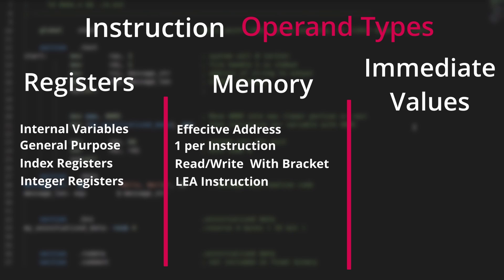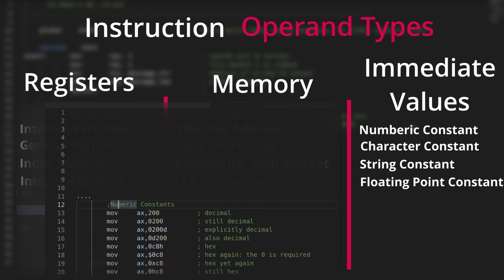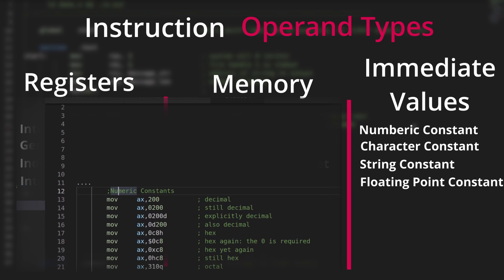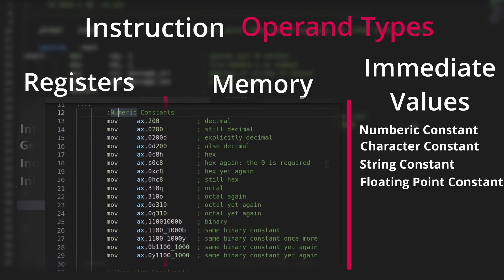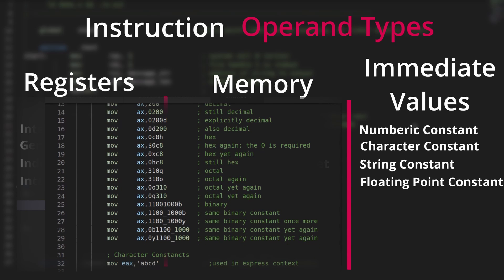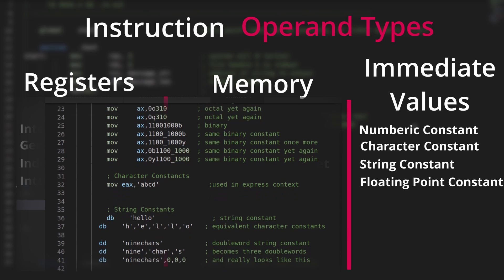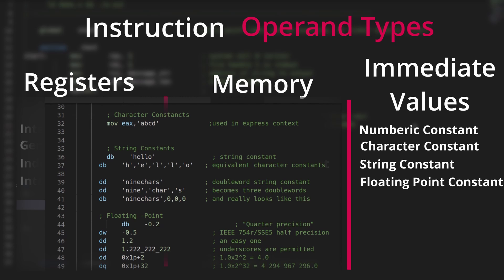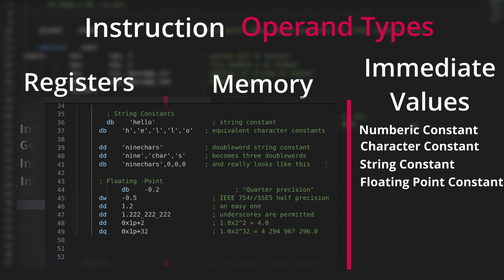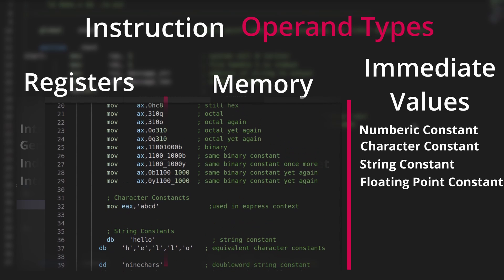Finally, immediate values. Immediate values are of four types: numeric, character, string, or floating-point constants. Numeric constants can be of any base, and you can use prefixes and suffixes to change the base. You can also use underscores to break up really long constants to increase readability. Character strings are eight characters or more enclosed in single or double quotes. Character constants are a maximum of eight bytes and can only be used in expression context, while string constants are only used within the data and BSS sections.